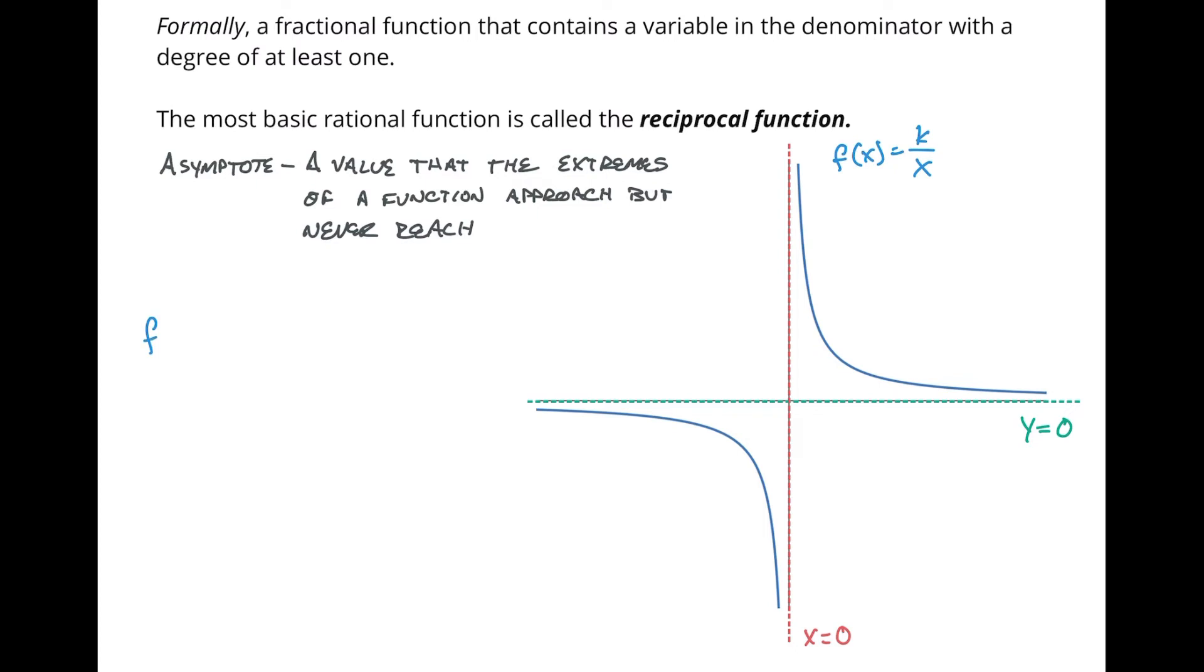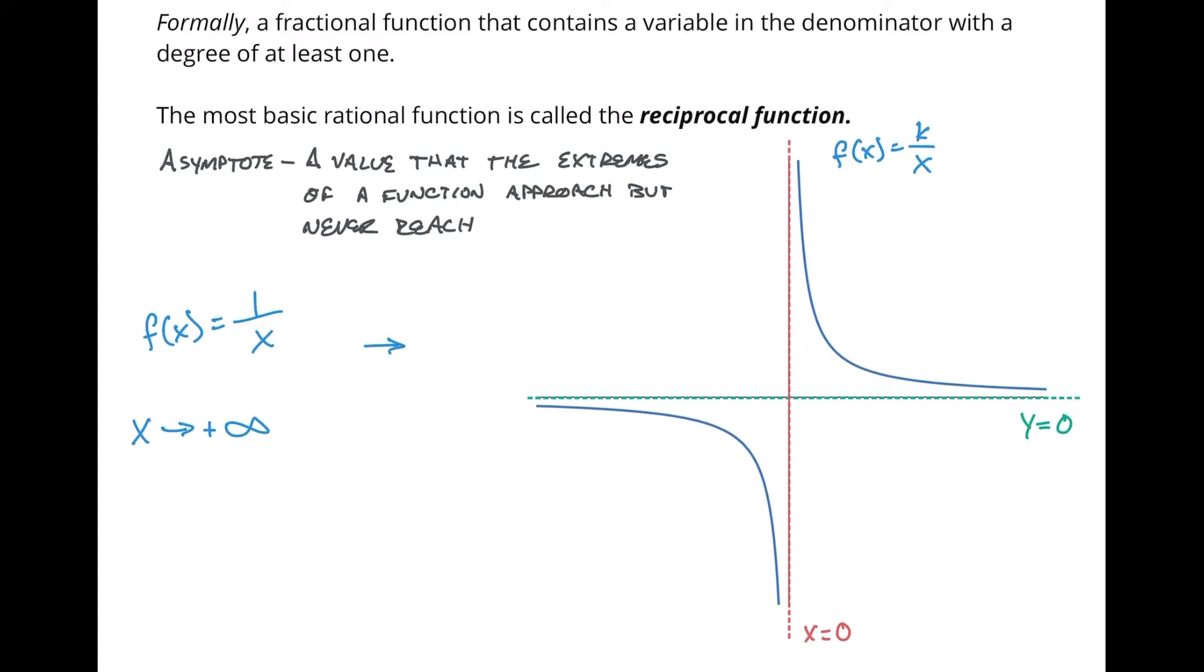So what's happening with our functions as we're approaching these different asymptotes? Let's assume that f of x, let's make it 1 over x. So as x goes out towards infinity, as x goes towards positive infinity, this little line, this little arrow, this thing means approaches, or we can say that it tends towards. That's another mathematical way that we say this, tends towards a specific value. But as x approaches positive infinity, then y approaches 0.